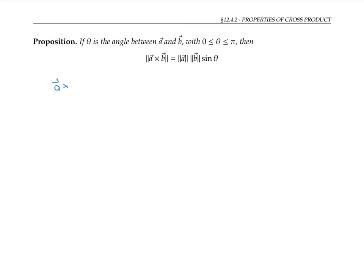First, let's prove the length formula. A cross B is defined in terms of components as the determinant of this matrix. Here, a₁, a₂, and a₃ are the components of A, and b₁, b₂, b₃ are the components of B. If I expand this out, like I did in the previous video, I get the following expression.